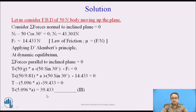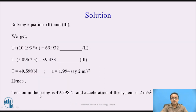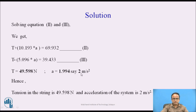By solving equations 2 and 3 simultaneously, we obtain the two unknowns: the tension in the string T = 49.598 N, and the acceleration of the system A = 1.994 ≈ 2 m/s².